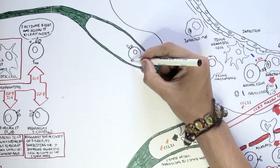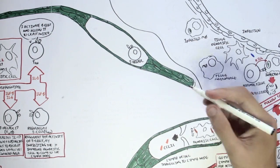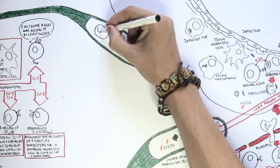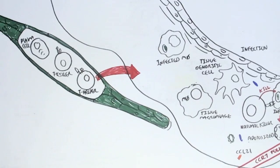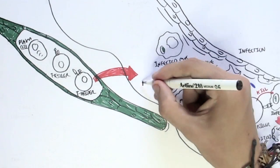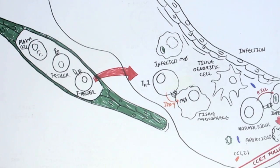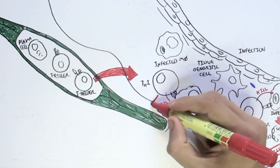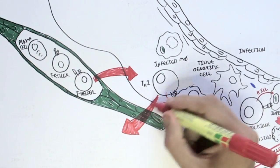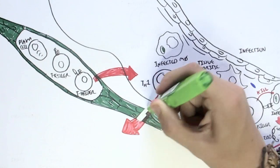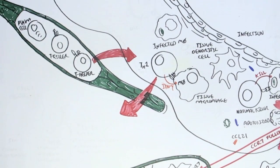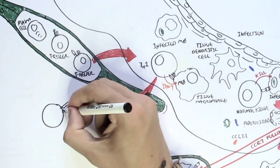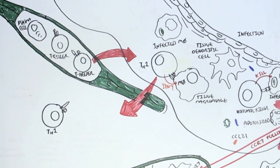So in this case, for example, we have the T helper and the T killer cell migrating to this infected site. Now what would they do? For starters, a T helper 1 cell will promote tissue macrophage engulfment of a pathogen by secreting interferon gamma. Let's have a closer look at the T helper 1 cell and look at its functions, and what it secretes, and how it promotes the immune response.